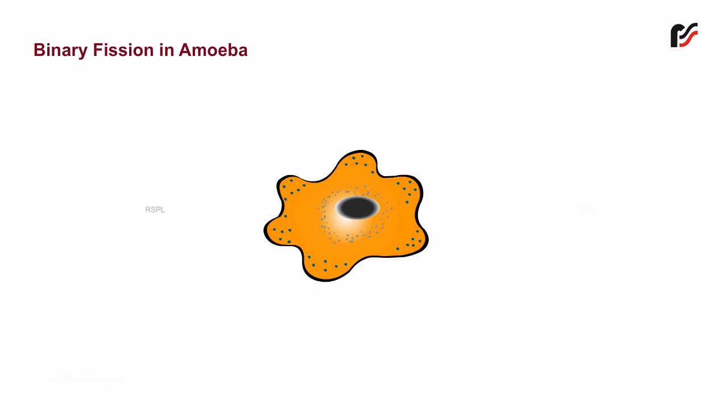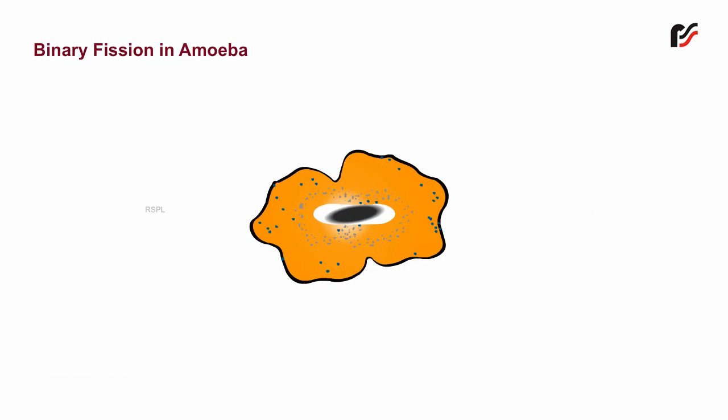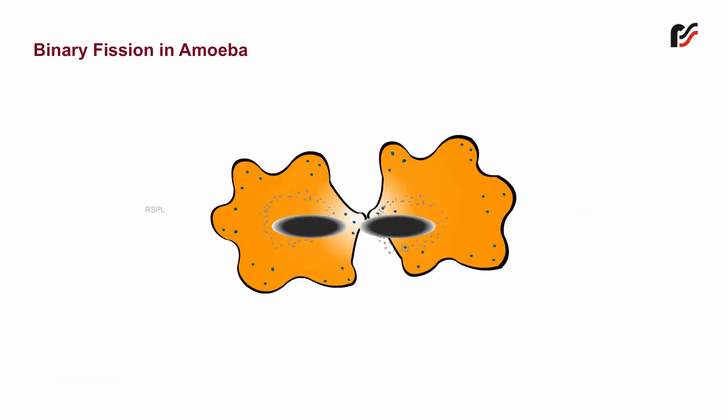Observe it. The parent cell becomes elongated. Without removing the slide, now change the focus to high power. Observe it. The nucleus divides amitotically first, and then the cytoplasm divides. At the point of fission, a constriction appears and deepens to divide the cell into two cells.